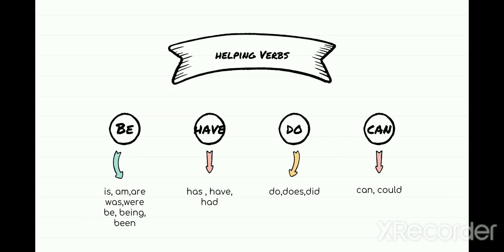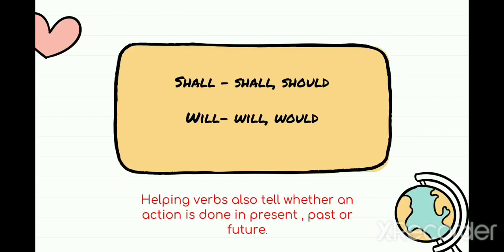Now let's move on to the next family — the shall family. Shall has only two words: shall itself and should. Shall is used with I and we. For example: 'I shall go to my friend's birthday party tomorrow night' or 'We shall make a cake for his birthday.' Shall is always used with I and we. Should is used when we are giving somebody advice — for example: 'You should have done your work,' 'You should brush your teeth.'